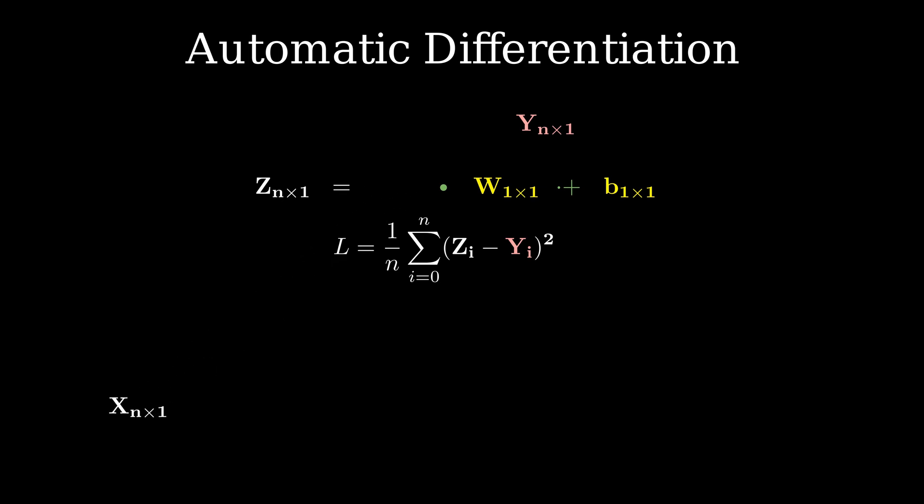What an automatic differentiation engine does is log all of this in a computation graph. The very first thing it does is put x as a leaf node followed by matrix multiplication which returns an intermediate variable. Bias is then added to each element of the vector z tilde to get the variable z.